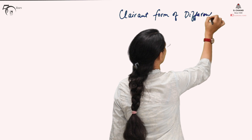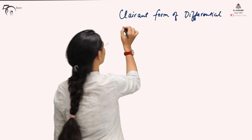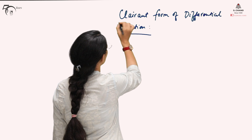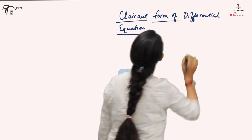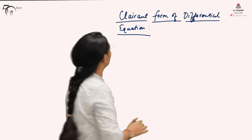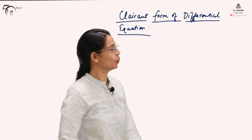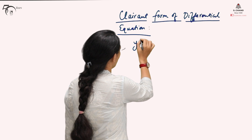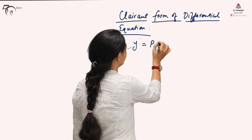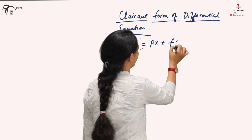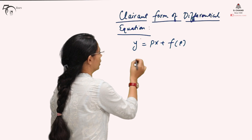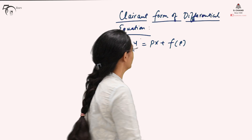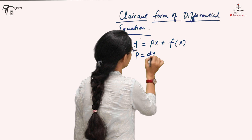Claret's form of differential equation is named after the French mathematician Claret's. In this form, the given differential equation is written as y equals px plus f of p, where p is the derivative of the dependent variable with respect to the independent variable — that is, p is dy/dx.